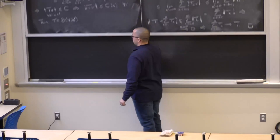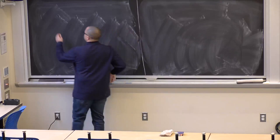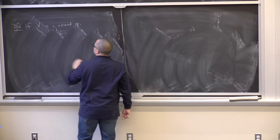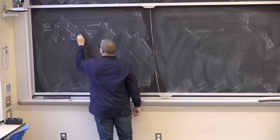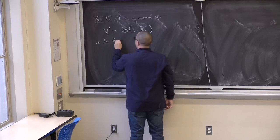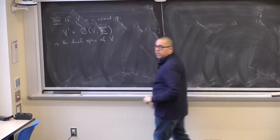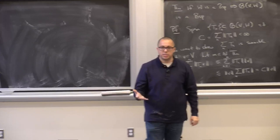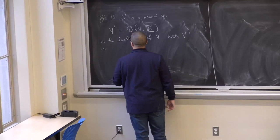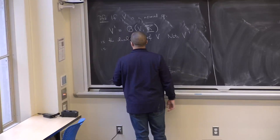Let me finish with a definition. If V is a normed space, we denote V' as the space of bounded linear operators from V to the space of scalars — this is referred to as the dual space of V. Since the space of scalars is always R or C, both of which are complete Banach spaces, by the theorem we just proved, the dual space is always a Banach space.